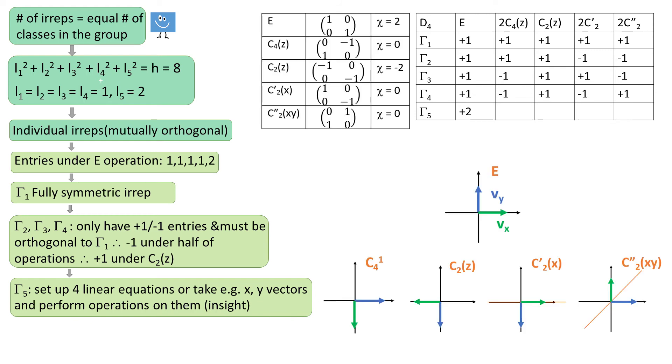So these are the matrices and we sum the diagonal terms and write them in the table. Please notice that we only need to do a single operation for each class. Also please recall that z-axis coincides with the principal axis, so in our case z-axis is sticking out of the page.